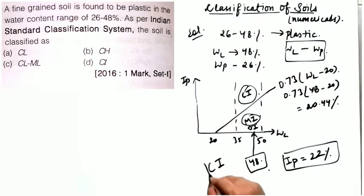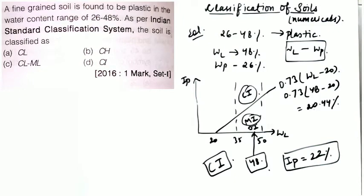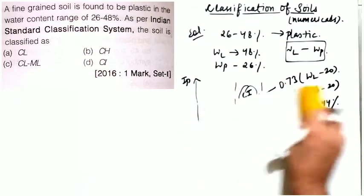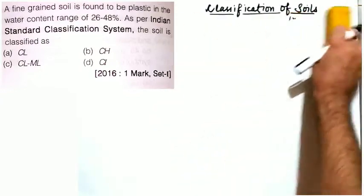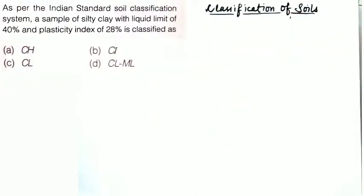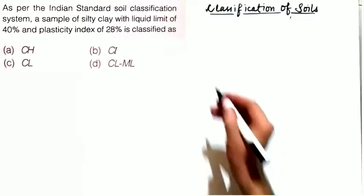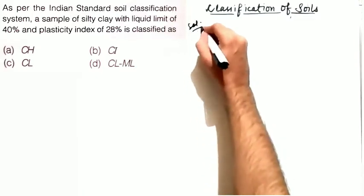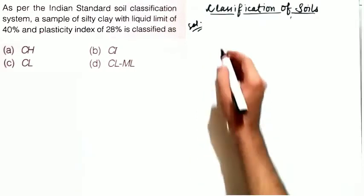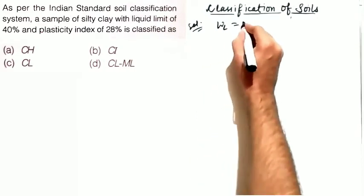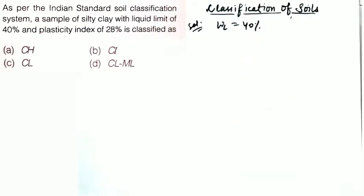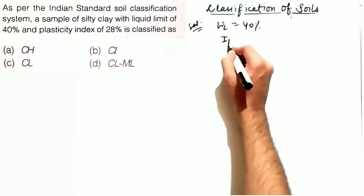So the soil is classified as CI — clay soil of intermediate plasticity. Moving to the next question: as per the Indian Standard Soil Classification System, a sample of silty clay has a liquid limit of 40% and a plasticity index of 28%.